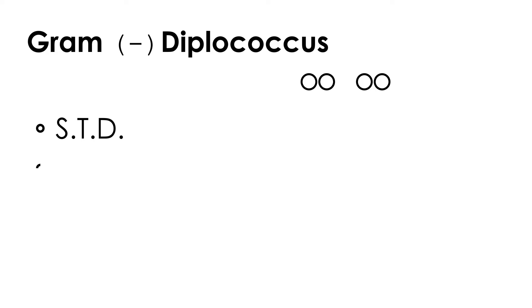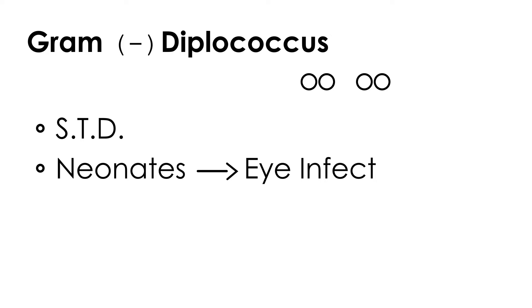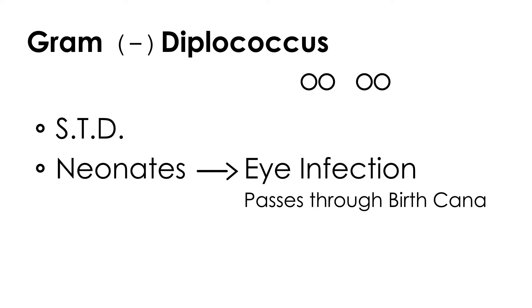Another way a person can get it is that a newborn baby can get an eye infection when passing through the birth canal if the mother has a Neisseria gonorrhea infection. There is also pelvic inflammatory disease, which can occur in women who acquire gonorrhea.